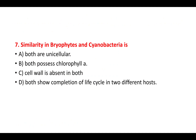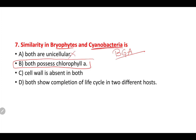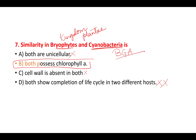Question 7: what is the similarity between bryophytes and cyanobacteria? Option A — both are unicellular — is wrong because bryophytes are multicellular. Option B — both possess chlorophyll — is correct. Cyanobacteria, also known as BGA or blue-green algae, have a chlorophyll pigment similar to kingdom Plantae, and bryophytes also belong to kingdom Plantae. Option C — cell wall is absent in both — is wrong. Option D — both complete their life cycle in two different hosts — is also wrong. So the right answer is option B: both possess chlorophyll A.